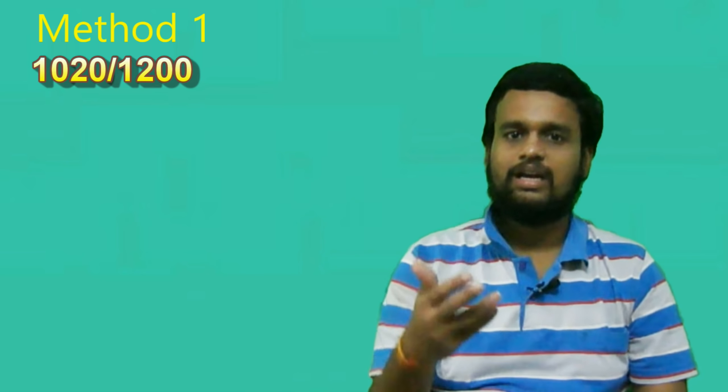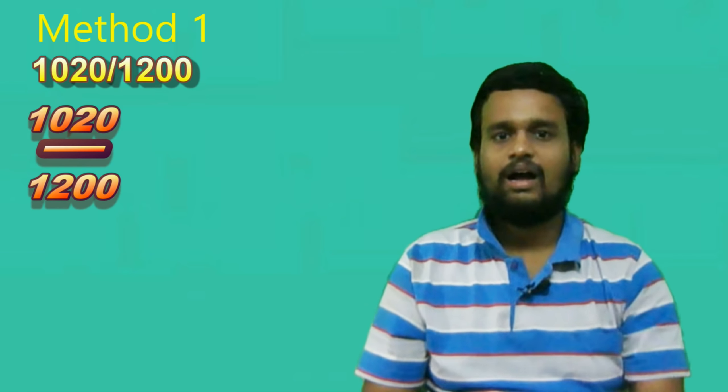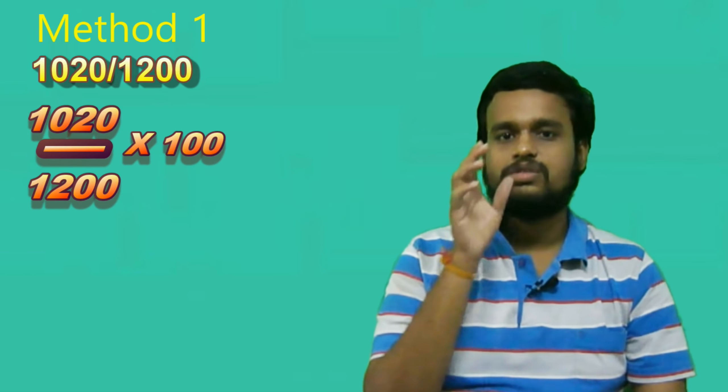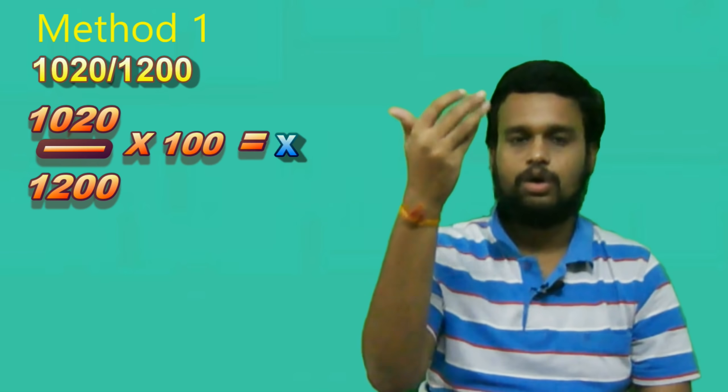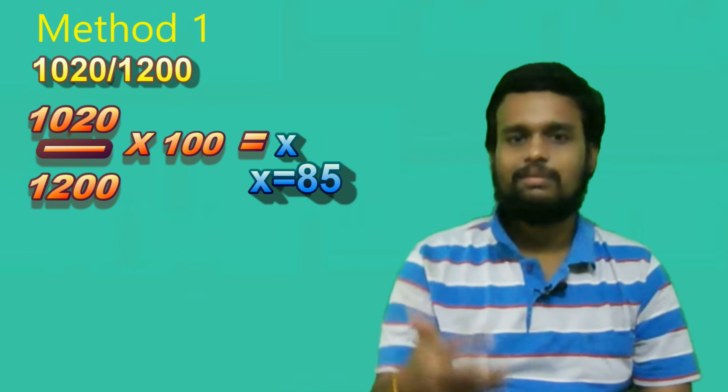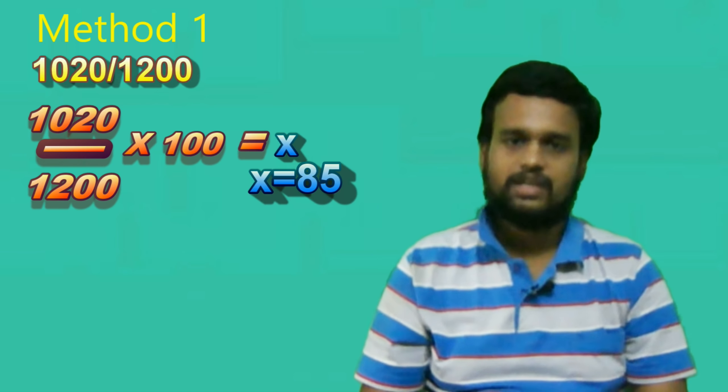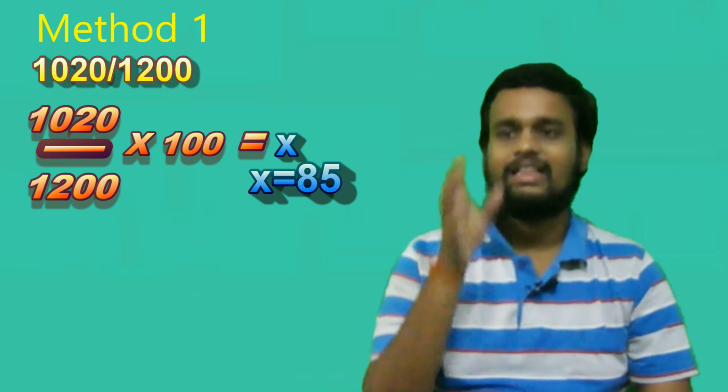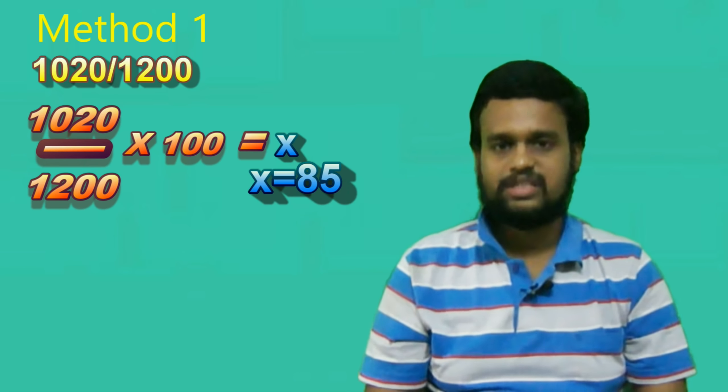For example, let's talk about the first method. Suppose you scored 1020 marks out of 1200. Now, what is the percentage? To find the percentage, you take your marks, 1020, and divide by the total marks, 1200, then multiply by 100. We're converting the 1200 value to 100. Whatever value you get when converted to 100, that's the percentage.